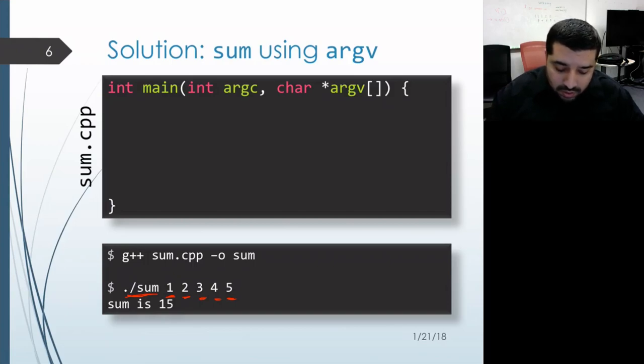What we need to do is iterate over the arguments starting at the argument at index one so that we ignore the program name, and then just call A2I and add it to a running sum.